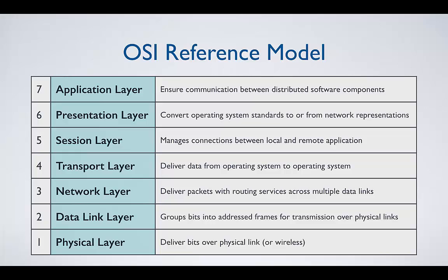The network layer connects the data links or local area networks together and therefore becomes concerned with inter-networking. This is the internet layer, so as you might expect, this is where the internet protocol resides. The transport layer is concerned with delivering data from operating system to operating system, not just from computer to computer. The transport layer is responsible for reassembling the packets, if necessary, into the usable data that was sent, and this is also where error checking occurs. On the sending end, the transport layer breaks down the message into packets that travel across the network. The transport layer is where TCP and UDP perform their functions.